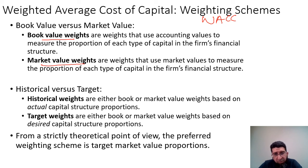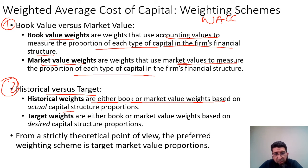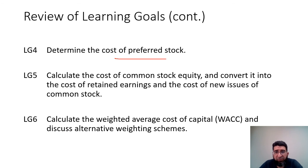There are alternative weighting schemes for WACC. Book value weights use accounting values to measure the proportion of each type of capital in the firm's financial structure, while market value weights use market values. Historical weights are either book or market value weights based on actual capital structure proportions, whereas target weights represent desired future capital structure proportions. From a strictly theoretical standpoint, the preferred scheme is target market value proportions.